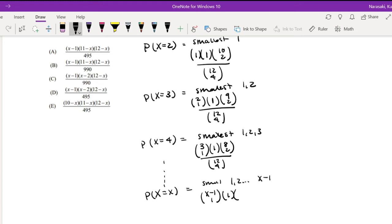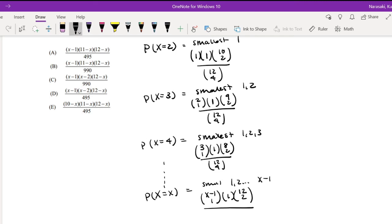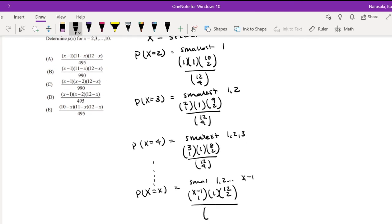And then if I already picked x minus 1 card and my x card, how many cards do I have left over? Well, that means I have 12 minus x cards left over, and I choose 2. You can kind of see the pattern, right? Like, 12 minus 4 is 8, 12 minus 3 is 9, 12 minus 2 is 10. So it goes along with our patterns. And then the total probability is just still the same. The whole possible combination is out of 12 cards, we choose 4.